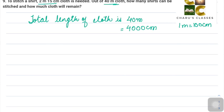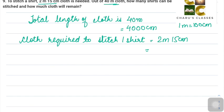Now, cloth required to stitch one shirt is 2 meter 15 centimeters. If I write it in centimeters only, 2 meters, which I convert to 200 centimeters plus 15 centimeters, that is total 215 centimeters.